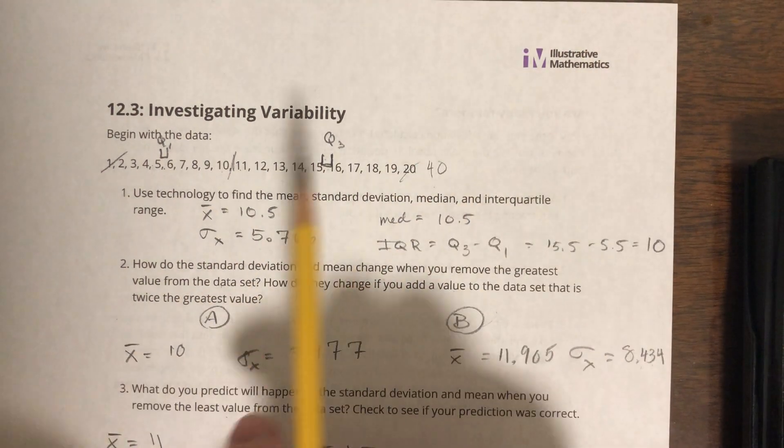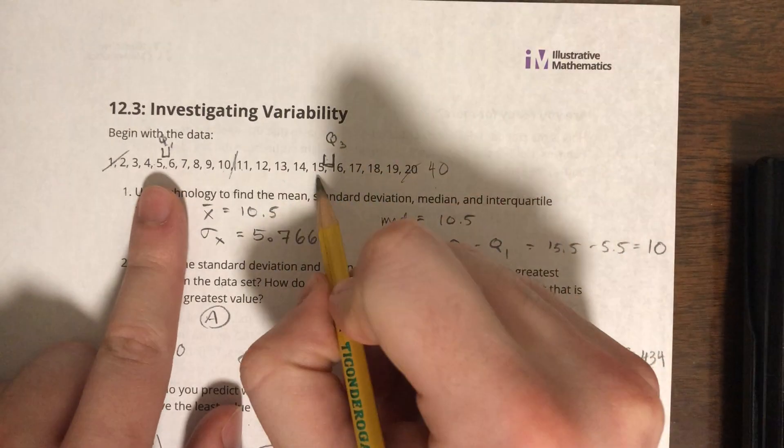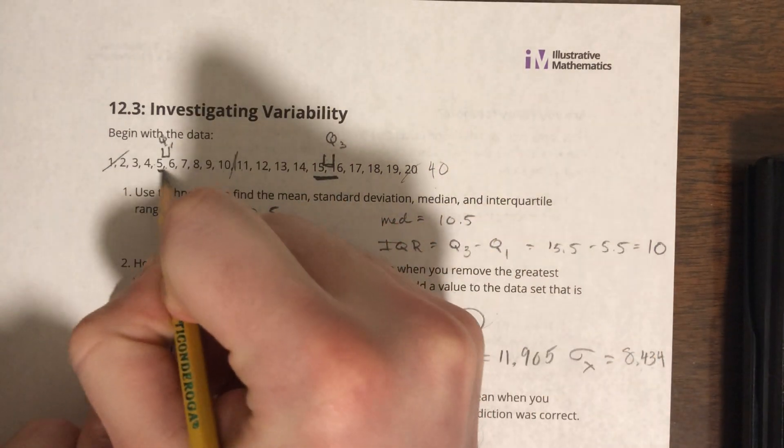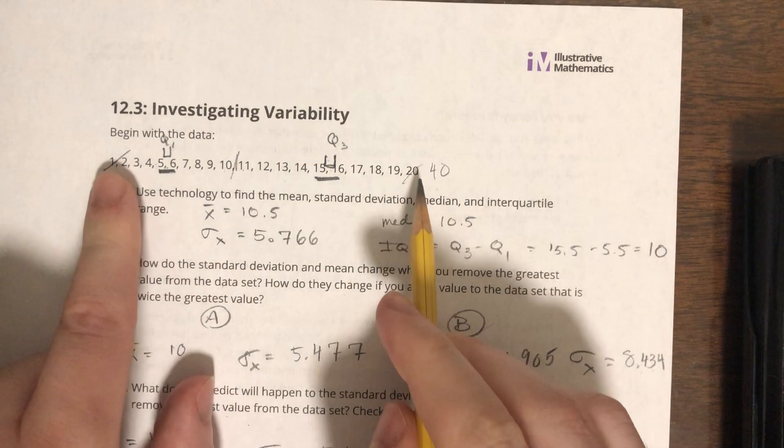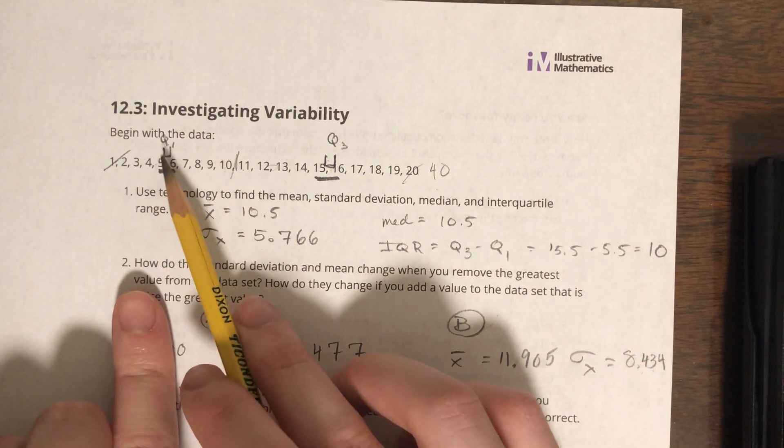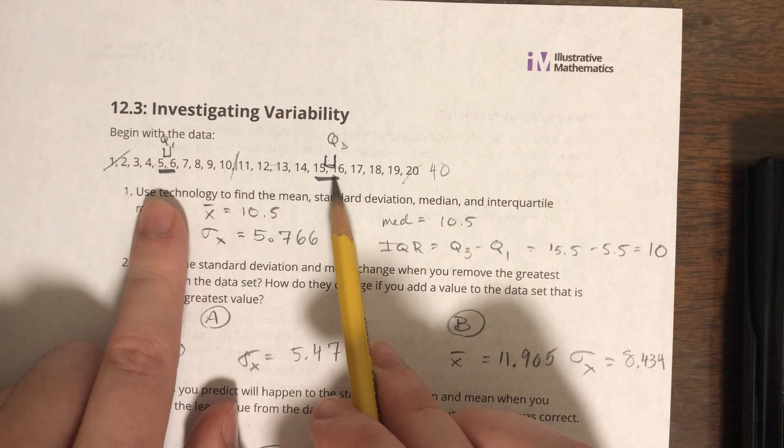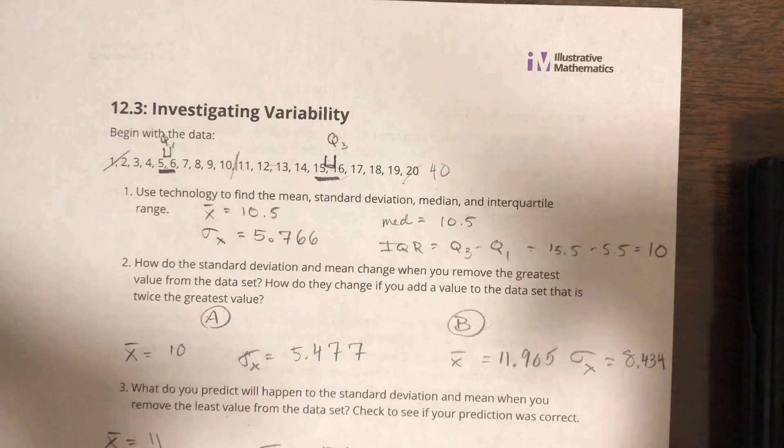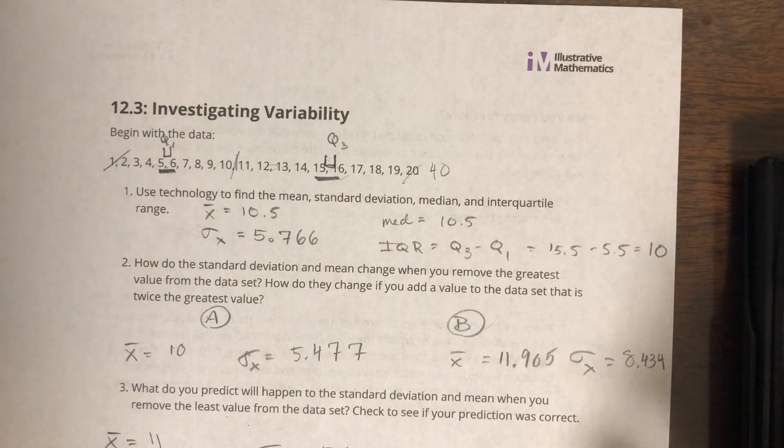Alright, that wouldn't change my Q1 and Q3. They're only dependent on these two numbers right here. So affecting extremes and affecting numbers in between is not going to affect it. As long as 5, 6, 15, and 16 are there, my Q1 and Q3 will always stay the same, in effect meaning my interquartile range will always stay the same.